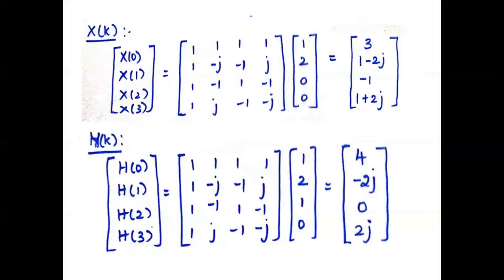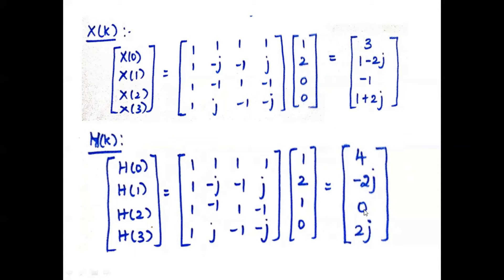The next step is to compute the DFT of X of n and DFT of H of n using the matrix method. In the matrix method, we write the twiddle matrix followed by the samples 1, 2, 0, 0. Taking each row and multiplying with the column, we obtain the output X of k as 3, 1 minus 2J, minus 1, 1 plus 2J. Repeating the same procedure for H of k gives 4, minus 2J, 0, and 2J.